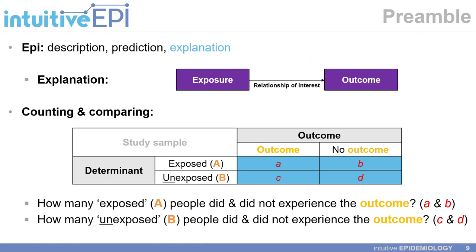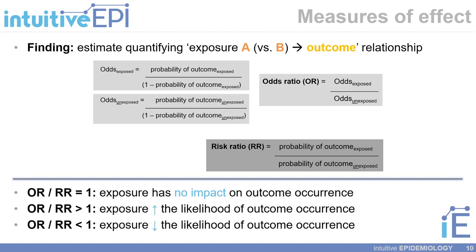Going back to previous videos, in epidemiology we can do description, prediction, as well as explanation. In the context of explanation, we are typically looking at the relationship between a given exposure and an outcome variable. Epidemiology can be broken down to a 2x2 table concept, where we count and compare how many exposed people did or did not experience the outcome of interest, and how many unexposed people did or did not experience the outcome under study.